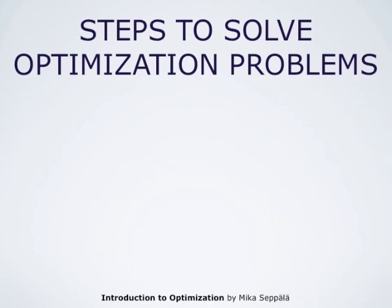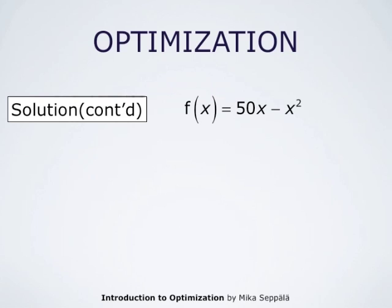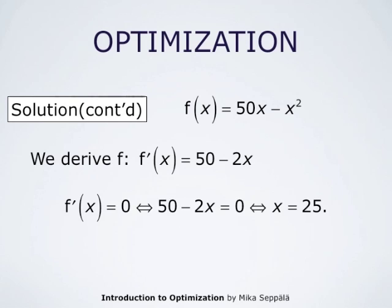We have now successfully turned this optimization problem into a problem of finding the maximum value of a given function. To do this, we differentiate this function with respect to its variable. The function is 50X − X², and its derivative is 50 − 2X. The critical values can be found by solving F'(X) = 0, that is 50 − 2X = 0, which yields X = 25. So this function has only one critical value, X = 25.